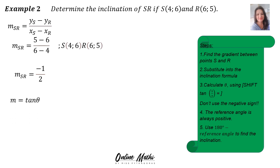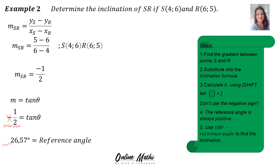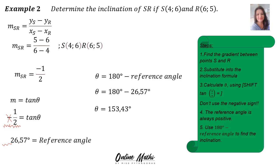Then into the formula m equals tan theta, but now your gradient is negative 1. When you work out the inclination, you're going to work out a reference angle. When working out a reference angle, you do not include the negative — you say shift tan positive 1 equals, and you find your reference angle of 26.57 degrees, because the reference angle is always positive. When you slot in the negative on your calculator you will get a negative angle, which is incorrect. To find the inclination, you say theta is 180 degrees minus the reference angle: 180 minus 26.57, giving theta equals 153.43 degrees.